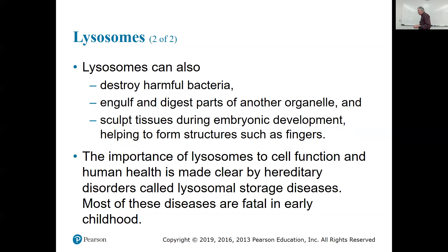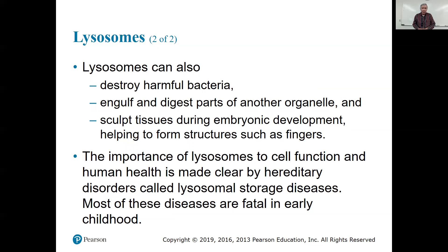Lysosomes also sculpt tissues during embryonic development, helping to form structures such as fingers. This is called apoptosis — programmed cell death. As an embryo differentiates into a fetus and then into a person, you have to make cells but also kill cells to make certain structures. The webbing between the fingers in a fetus — those cells kill themselves by opening up their lysosomes and digesting themselves from the inside out. That's how that webbing gets destroyed.